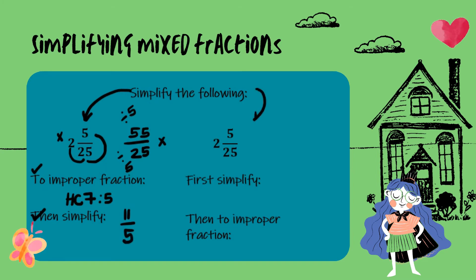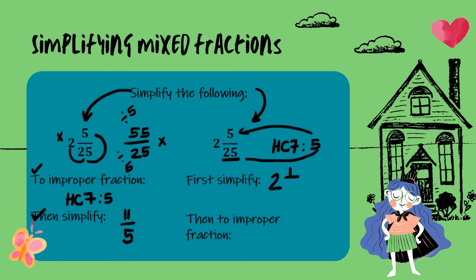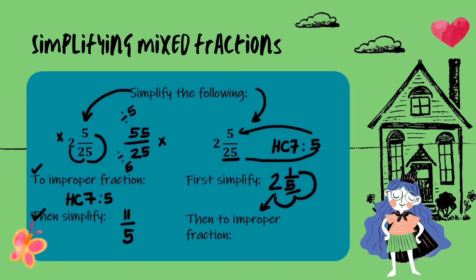Alternatively, we can first simplify the fractional part of the mixed fraction and then convert it to an improper fraction. The highest common factor of 5 and 25 is 5. So 5 divided by 5 is 1 and 25 divided by 5 is 5, giving us 2 and 1 over 5. Then we convert: 2 times 5 is 10, and 10 plus 1 is 11. Our simplified fraction is 11 over 5.